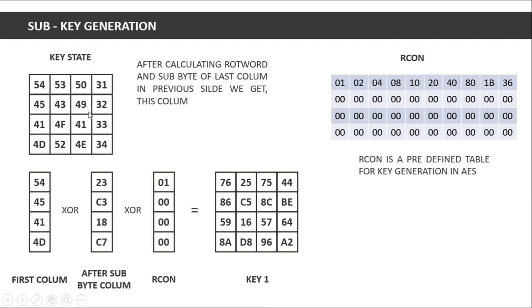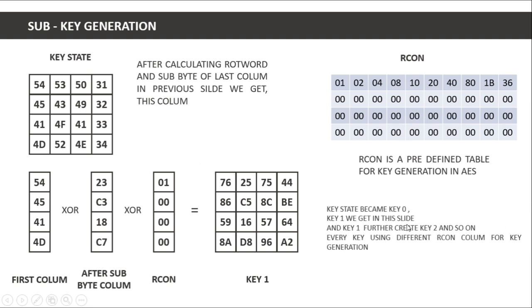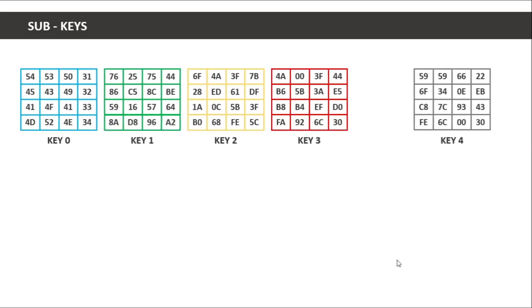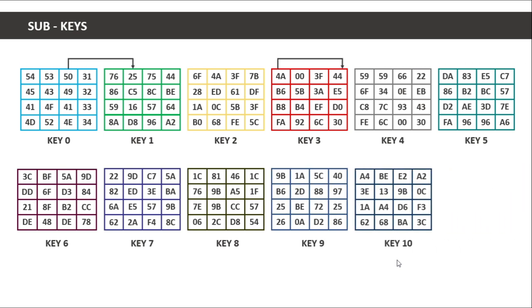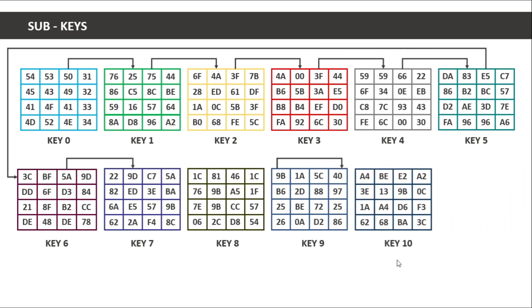Now we have key one generated from key zero. Key zero is used for the pre-round transformation. Key one further creates key two, and so on — each key is used to create the next sub-key until key 10. For every key generation step we use a different r-con column: key one uses the first column, key two uses the second, and so on. We generate all sub-keys from key zero through key ten.